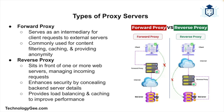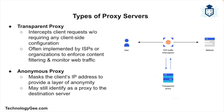Proxy servers come in various types, each serving different purposes and offering unique features. A forward proxy — also known simply as a proxy — serves as an intermediary for clients seeking resources from other servers; it is typically used for filtering content, caching, and providing anonymity. A reverse proxy sits in front of one or more web servers and forwards client requests to those servers; it is used for load balancing, caching, and enhancing security by hiding the identity of the back-end servers.